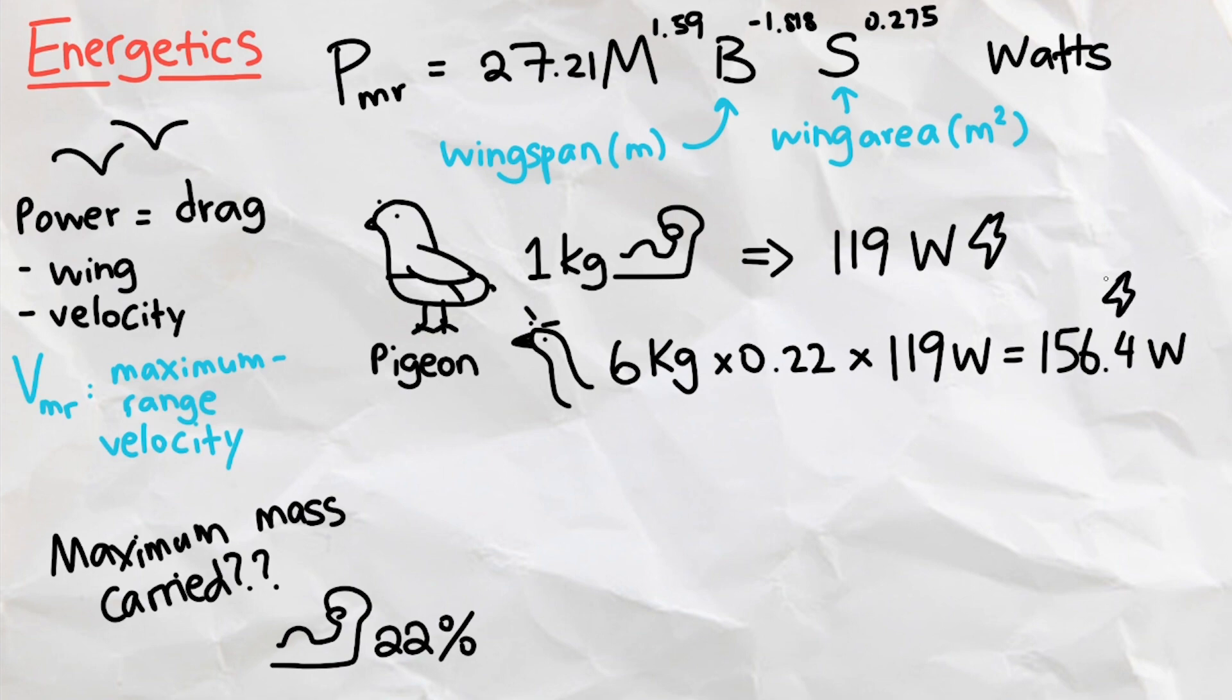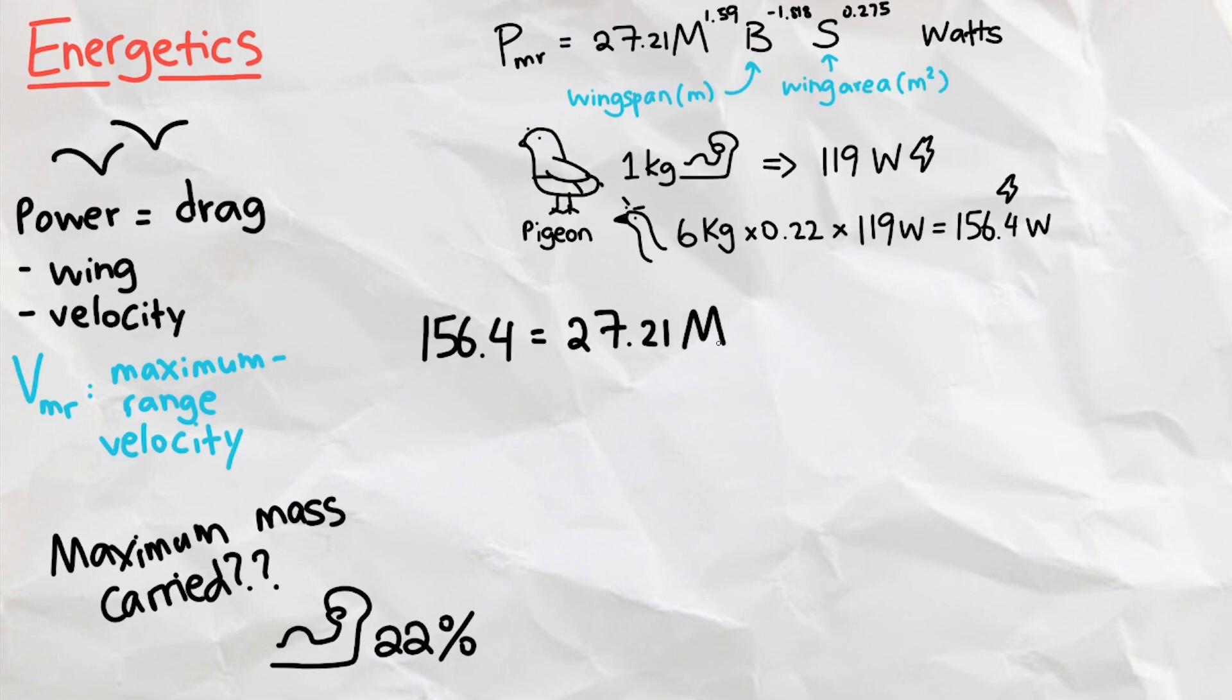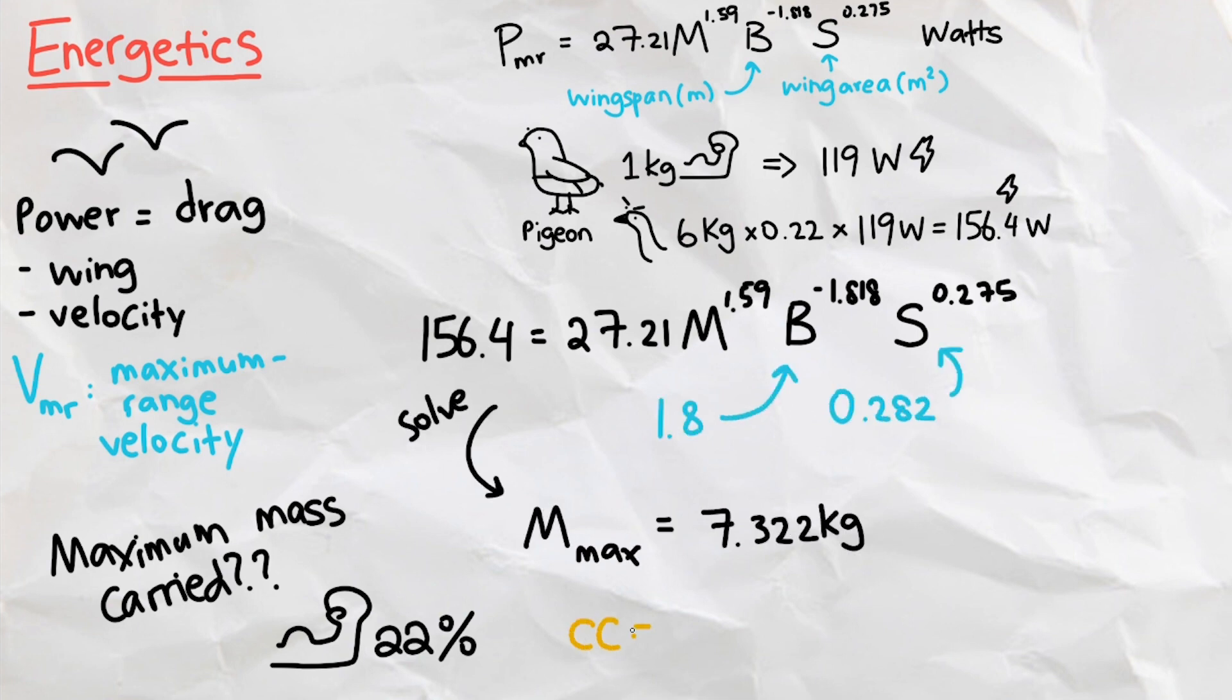So now, with the 6 kg Canada goose, its maximum power generated will be 156.4 watts, so the maximum mass a goose's wing can carry will be this. To find the carrying capacity of the goose, we just need to subtract the goose's actual weight by its maximum carry weight, which gives us how much extra weight the goose could carry with its wings. Plugging everything in, we see that the carrying capacity of the Canada goose is 1.322 kg from this model.